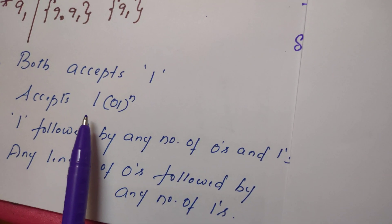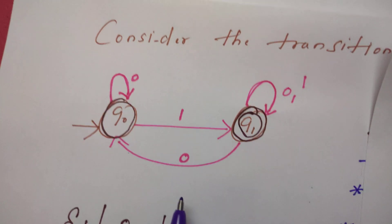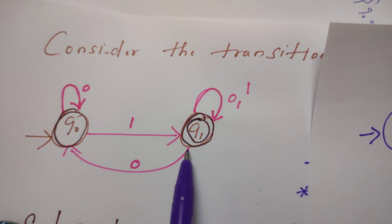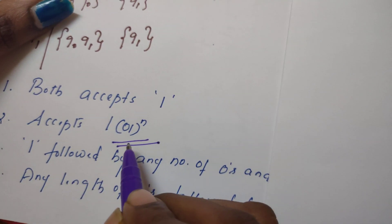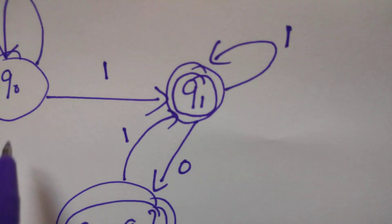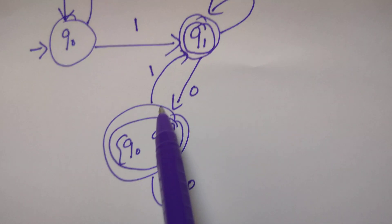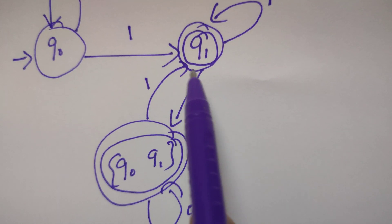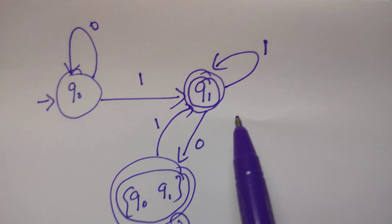Now let us see another pattern. Both NFSM and DFSM accept the pattern '1' followed by repeated '01'. In the NFSM, from the start state it reads 1, then accepts repeated 0,1 cycles. This pattern is accepted by NFSM. In the DFSM: from start state Q0 it reads 1, from Q1 it reads 0, then from {Q0, Q1} it reads 1 — and so on. So both machines accept the pattern (10)^n repeatedly.